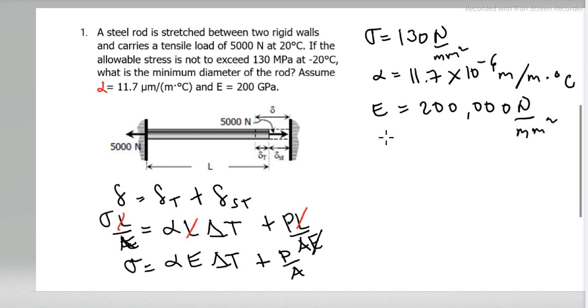And then change in temperature equals final temperature minus initial temperature. So final temperature of negative 20 degrees Celsius minus 20 degrees Celsius initial equals negative 40 degrees Celsius. So the change can be positive or negative. So 40 degrees Celsius is the change.